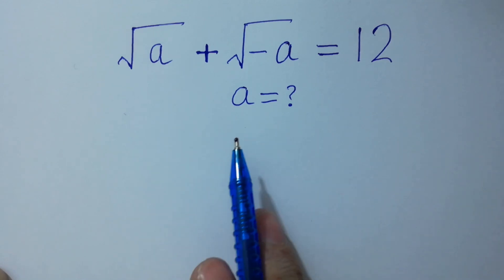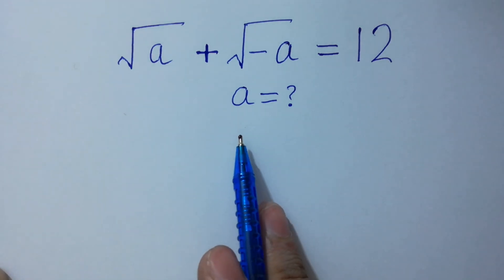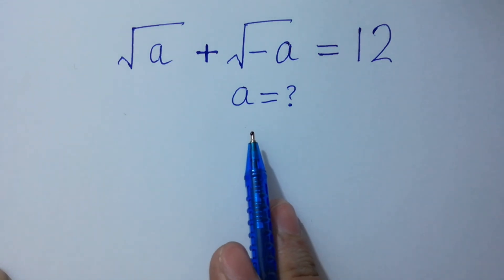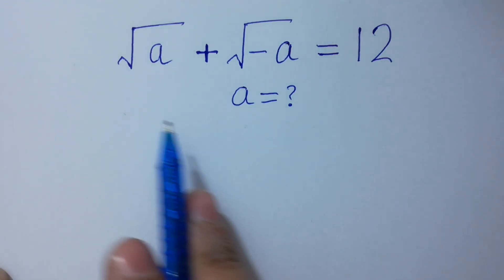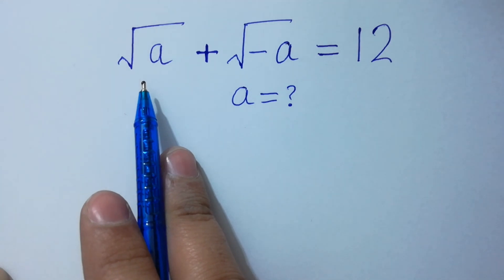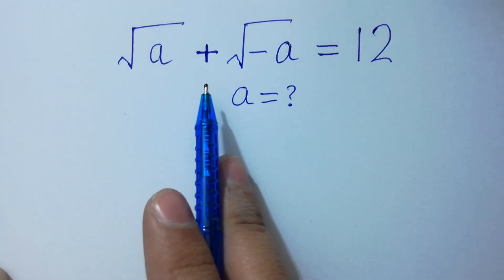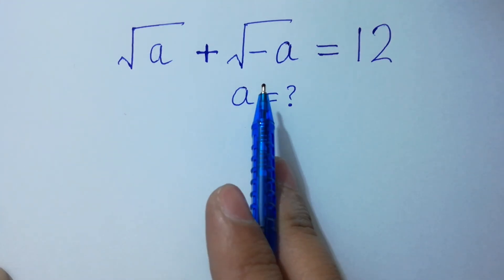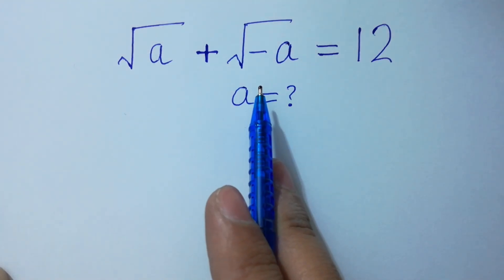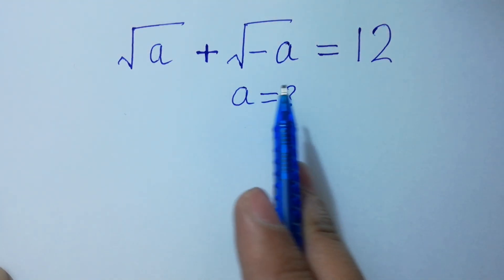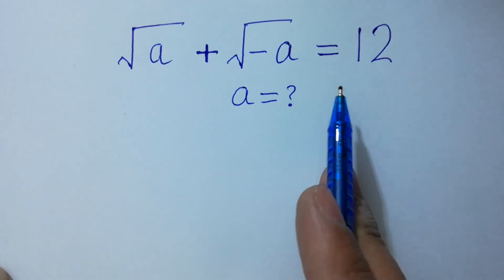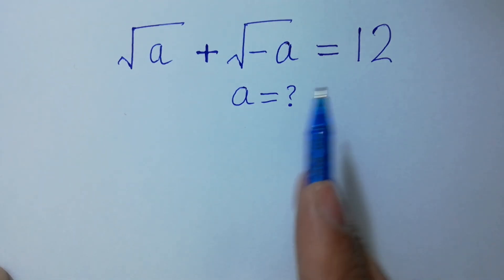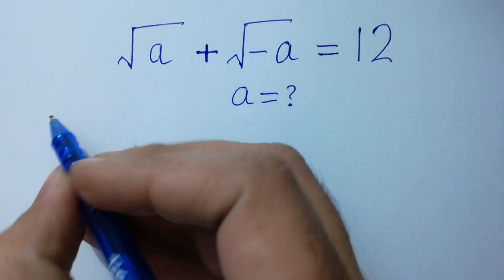Hello friends. Find the value of a if square root of a plus square root of minus a equals 12. Let's have a solution.